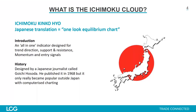It was designed by a Japanese journalist called Goichi Hasada. He developed it in the 1930s but published it in 1968. It only really became popular outside Japan more recently — roughly the last ten years or so — when computerized and online trading became very popular, making it much easier to plot these indicators on charts. Doing this by hand would have been quite difficult.